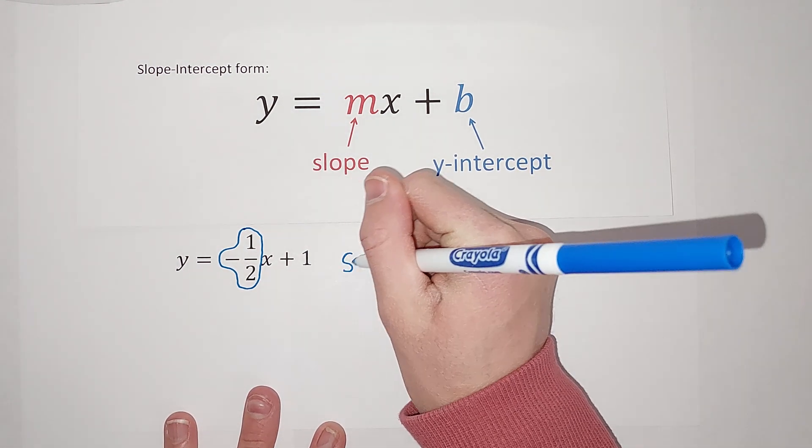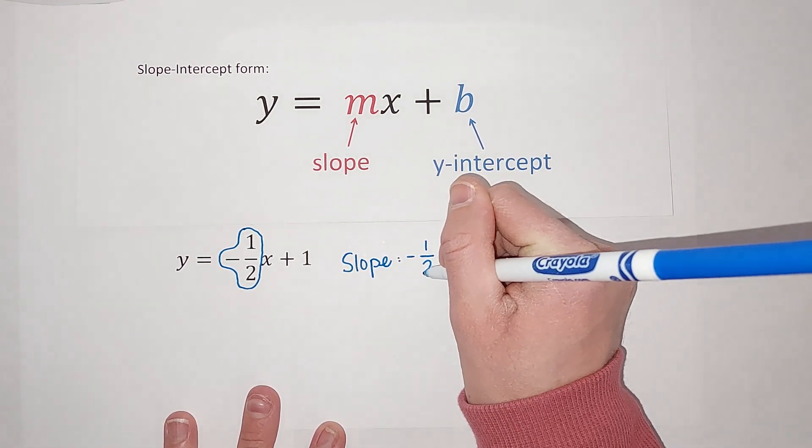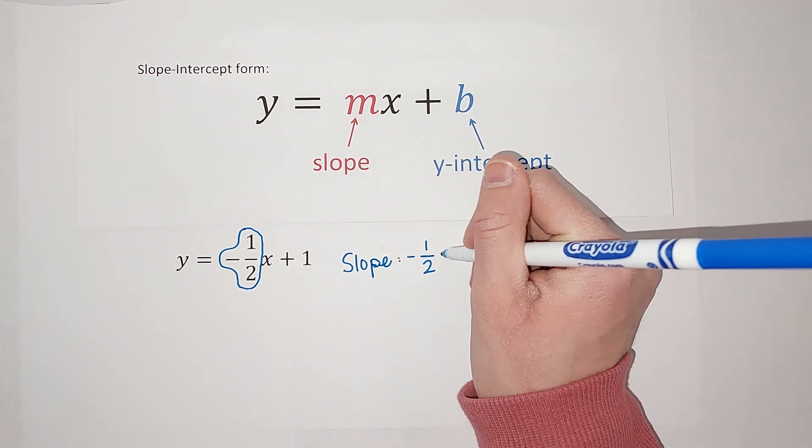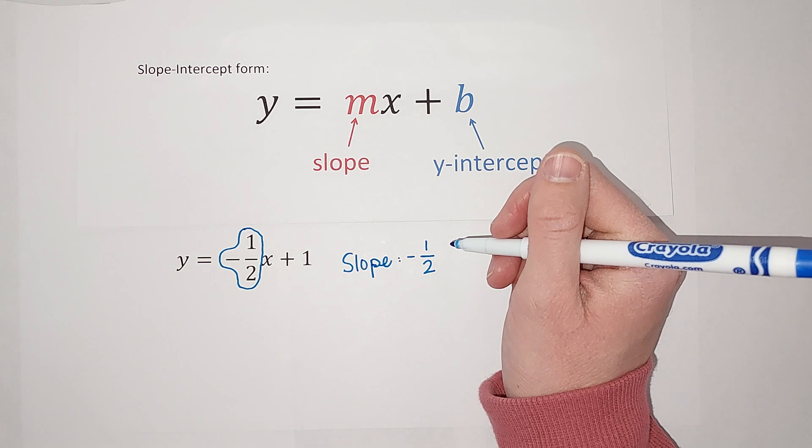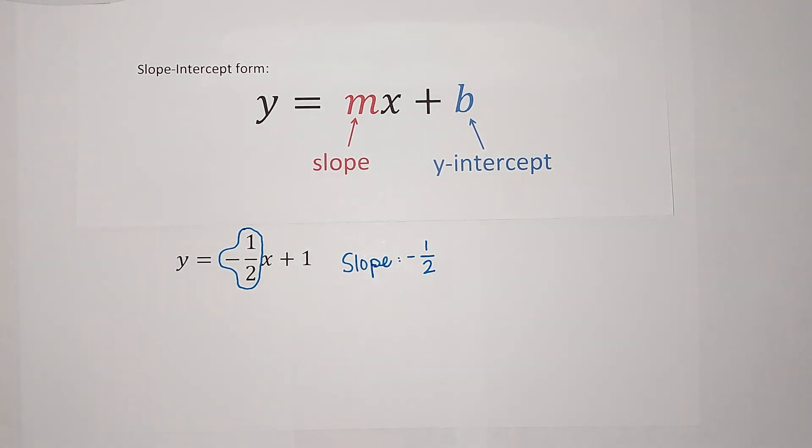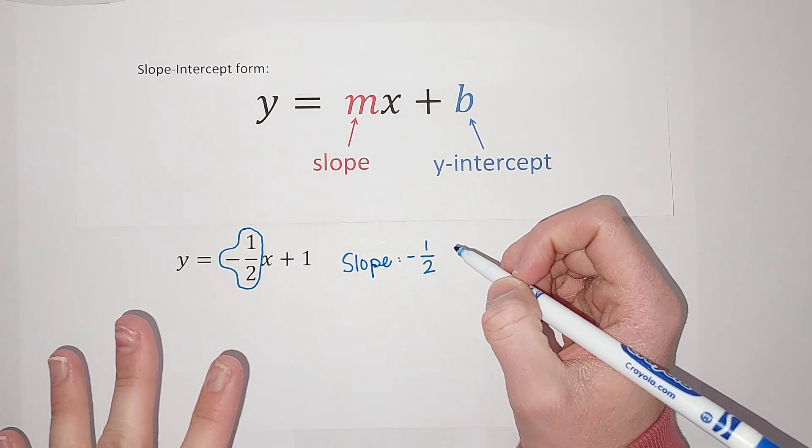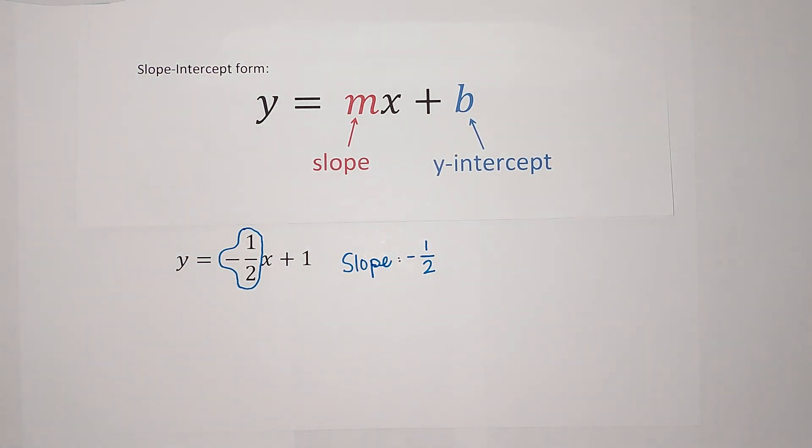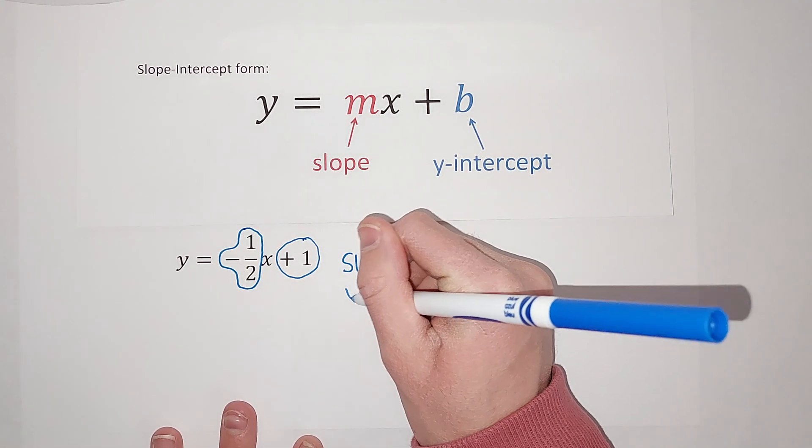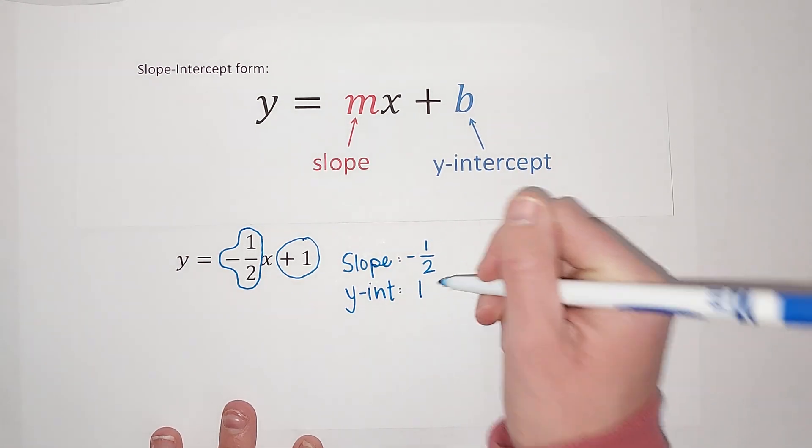So my slope in this one is negative 1 half. Sometimes I'll see students write an x here, but the x actually isn't part of the slope. It just helps you find what the slope is. But you don't actually write the x as part of your slope. Now, my y-intercept is whatever is being added or subtracted on the back.